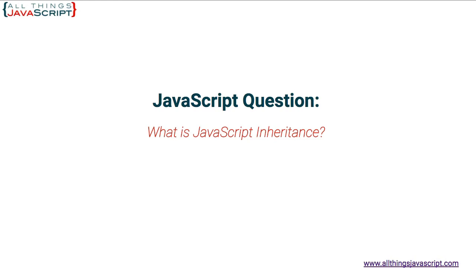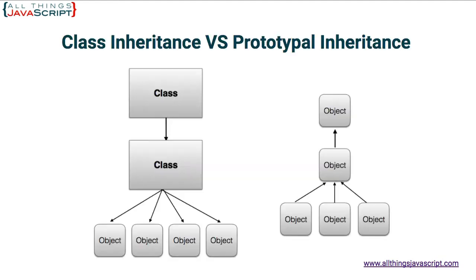Let's take a look at a diagram that can help explain this. On the left in this diagram is classical inheritance and on the right is what we call prototypal inheritance. This is what JavaScript supports. I'll explain in a minute why it is called prototypal inheritance. First, let's look at the diagram in detail.